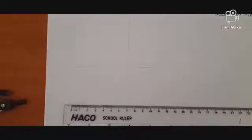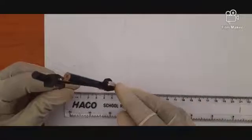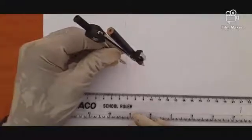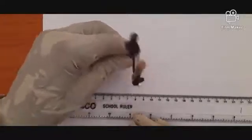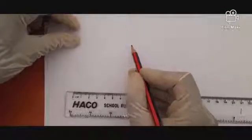Now we measure for our minor axis which is 50mm, so we measure 25mm on each side — 25mm here and 25mm there. Once we have that, we name the points: this one becomes A, this one becomes A on the other side, this one becomes B, this becomes C, and this one becomes D.